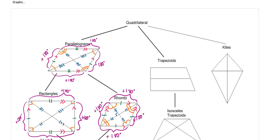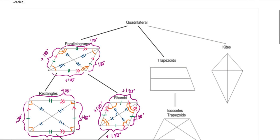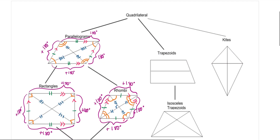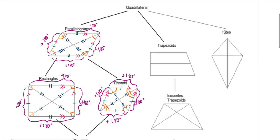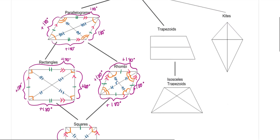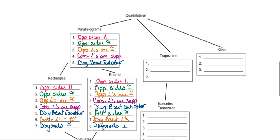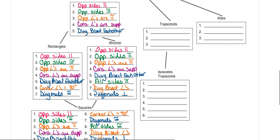We're going to finish up all of our quadrilaterals. We're going to work on both trapezoids and kites. Remember, go back to this graphic organizer, which was on your parallelogram notes. Trapezoids.